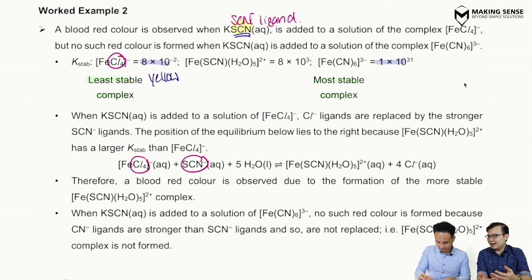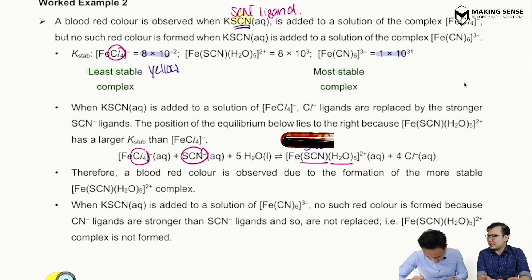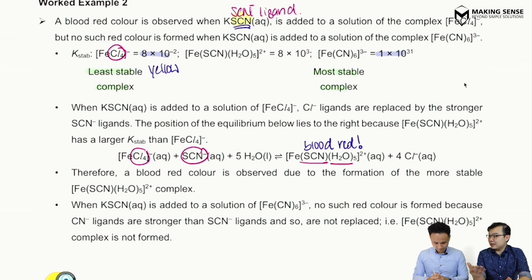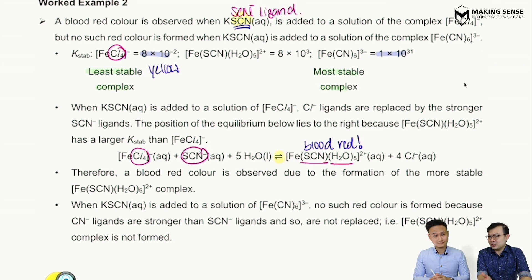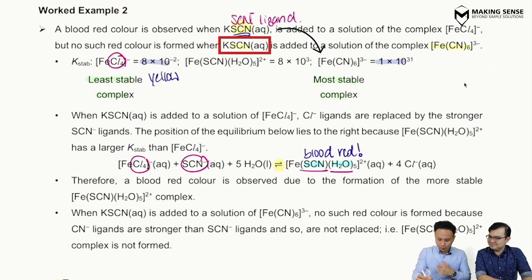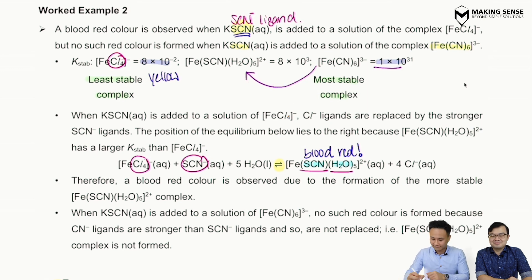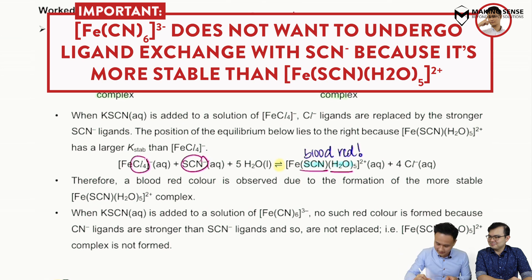This new complex containing SCN⁻ is blood red in color. Importantly, a ligand exchange reaction must always be written as a reversible reaction. Also, memorize that the SCN complex has only one SCN⁻ ligand; the other five are still water molecules. However, if you add thiocyanate to [Fe(CN)₆]³⁻ — which has a very large Kstab — it will not form the blood red complex, because that complex is already very stable and has no tendency to swap its ligands.